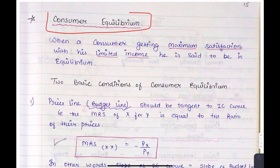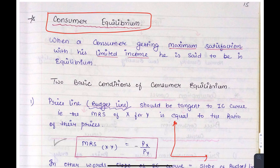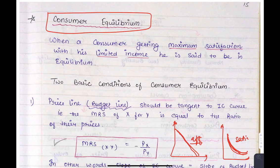Now let's go to consumer equilibrium. Consumer equilibrium is reached at the point where the slope of the budget line and the IC curve are equal. In simple terms, the budget line shows our affordability and the IC curve shows our satisfaction level. When our satisfaction level and affordability meet, our equilibrium will come.